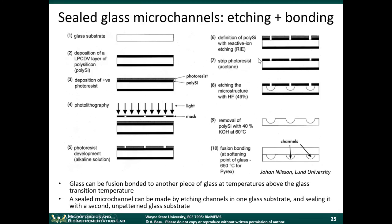Then you use this polysilicon as a mask to do your etching with HF. After the HF etch, you remove the polysilicon, and you're left with just the glass microchannels with an open top. You take another glass slide, press it on top, and fusion bond the two layers together at about 650 degrees Celsius.